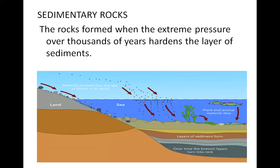Now let's talk about sedimentary rocks and how they are formed. Sand, clay, and rock fragments are carried by wind or water into water bodies. They sink to the bottom as sediments. Over time, multiple layers of sediment accumulate one over the other. The layers on top compress the bottom layer, and continuous pressure over thousands of years cements the bottom layers together. When this hardens, it forms rock. Rocks formed this way are called sedimentary rocks.